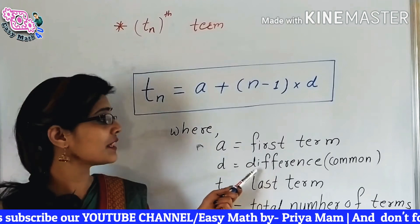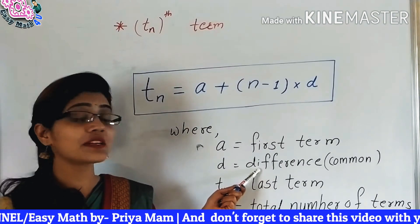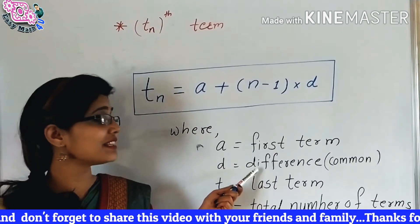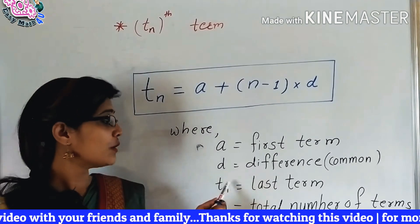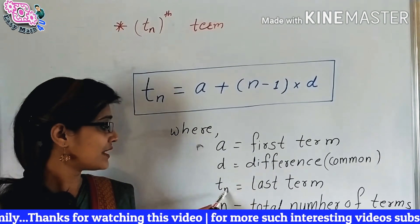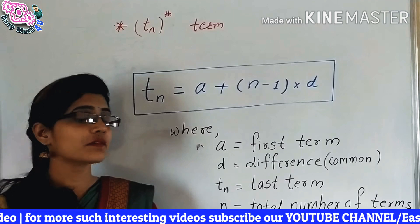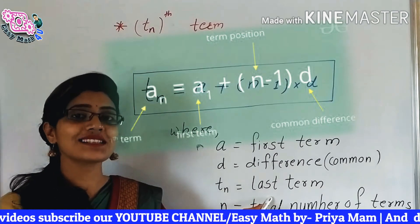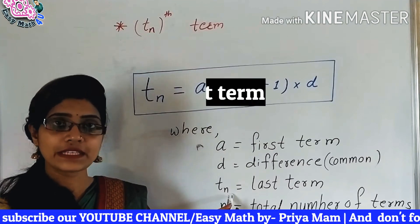यह जो sequence है, वो कौन से भी दो terms का आप difference calculate कर सकते हो. Difference यह common है, इसलिए difference same ही होगा. So, you have to write down D equal to that term. Next, T of n — यह जो आपका particular sequence है, उस sequence की जो last term होगी, that is T of n.